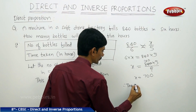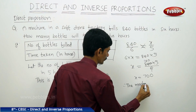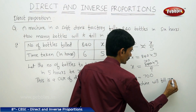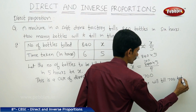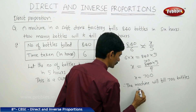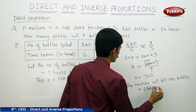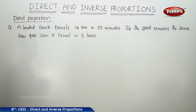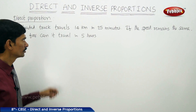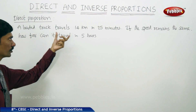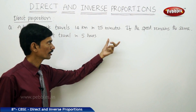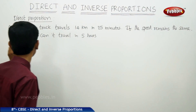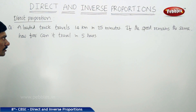Therefore, the machine will fill 700 bottles in 5 hours. Now let us solve the next question: a loaded truck travels 14 kilometers in 25 minutes. If the speed remains the same — meaning it is maintaining a constant speed — then how far can it travel in 5 hours?